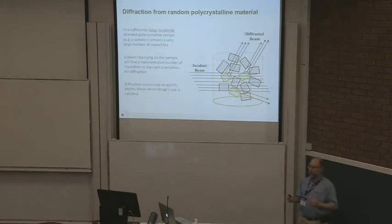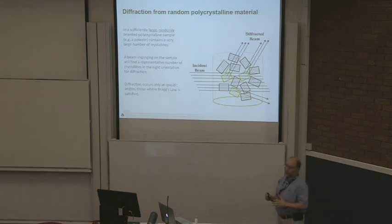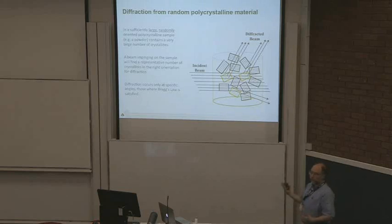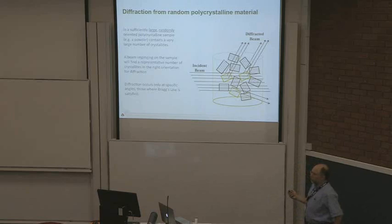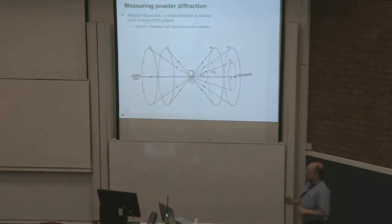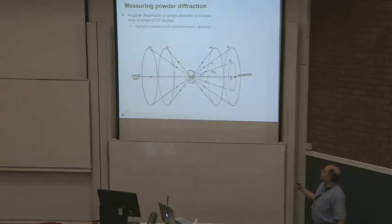For those of you who have not thought about powder diffraction since freshman physics, I'll remind you that if you have an incident beam on a crystal, if the crystal is oriented properly, it diffracts. If it's not oriented properly, you don't get diffraction. If you have a large number of randomly oriented crystals in the X-ray beam, you will only get diffraction at specified rings corresponding to the Bragg angles.